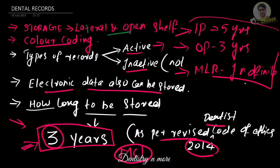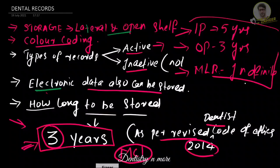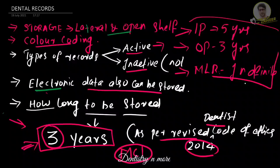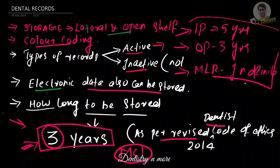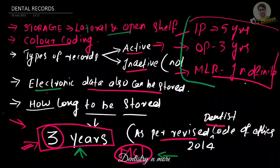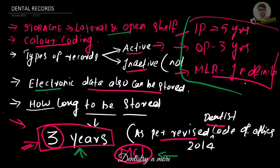Nowadays, we have lots of software and computer systems to store data electronically, so we can store data on computers or laptops. A most crucial question is: how long should all this data be stored? As per the revised Dentist's Code of Ethics 2014, we need to store these records for three years. Similarly, the Medical Council of India also requires medical records to be stored for three years. Inpatient (IP) records should be kept for five years, and outpatient (OP) records for three years.